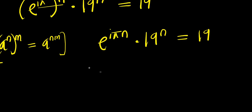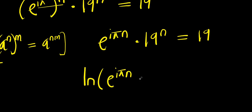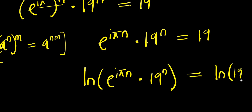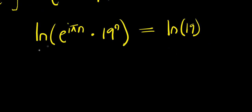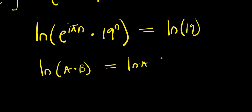Now, what we can do is make use of the natural log. Taking the natural log of both sides: natural log of e^(iπn) times 19^n equals natural log of 19. This is just like having natural log of a times b, which equals natural log of a plus natural log of b.